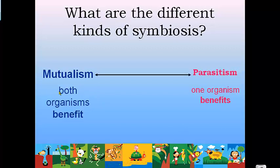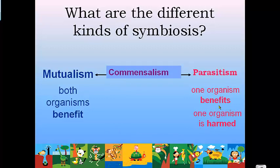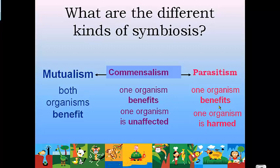There are three main types of symbiosis. Mutualism is when both organisms in the relationship get some sort of benefit — they both benefit. Then you have parasitism, which is when one organism benefits and the other one is actually harmed, sometimes even to the point of death. And finally, commensalism is when one organism benefits and the other one doesn't really care either way. Those are the three types of symbiosis.